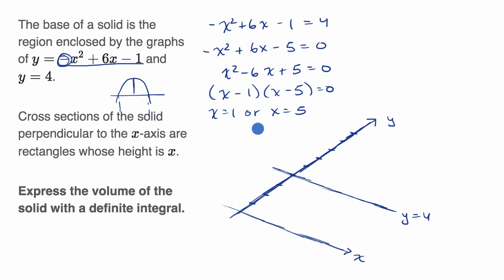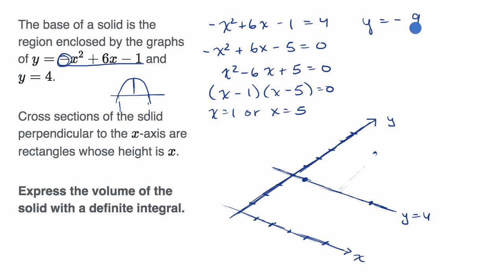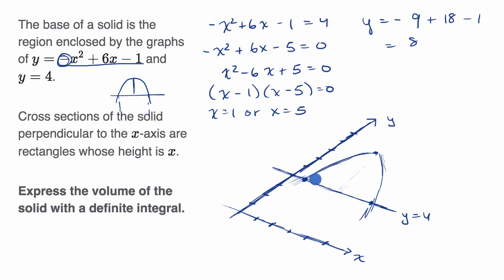We have y equals negative x squared plus 6x minus one, which intersects y equals four at x equals one and x equals five. So we have the point one comma four and the point five comma four. The vertex is when x equals three — substituting in, y equals negative nine plus 18 minus one, which gives y equals eight. So we have the point three comma eight. This is the region in question, and that's going to be the base of our solid.